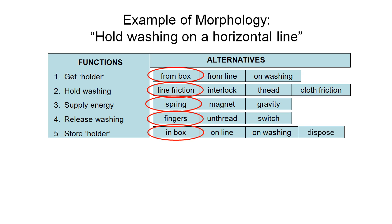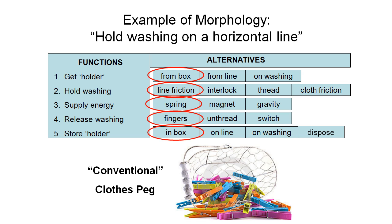Reading down this first column: getting the holder from a box, holding the washing using line friction, supplying energy via a spring, releasing the washing using our fingers, and storing it in a box. That sounds a lot like a very conventional closed peg which we should all be familiar with. So that's not a very creative or interesting solution — let's have a look at some of the other ones.